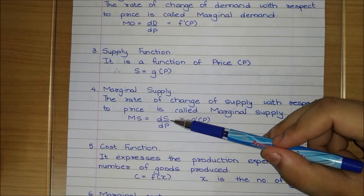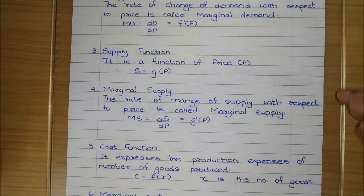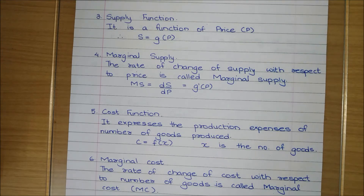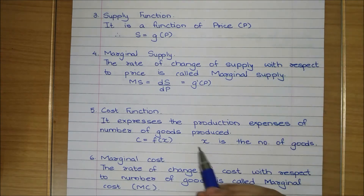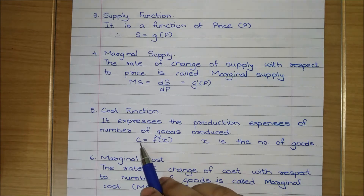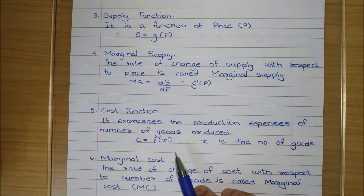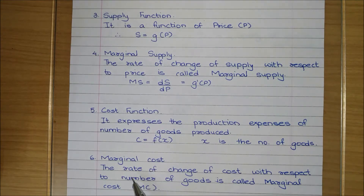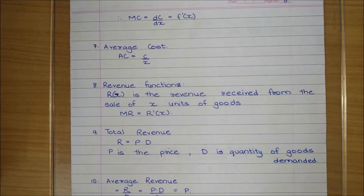To find marginal supply, we differentiate supply with respect to price. Next is the cost function, which expresses the production expenses for the number of goods produced — it tells us how much it costs to make something. The cost function is a function of x, where x is the number of goods. There are fixed costs like factory rent, and variable costs that depend on how many goods are being produced. Marginal cost is the rate of change of cost with respect to x, so we differentiate C with respect to x to get marginal cost: dC/dx.